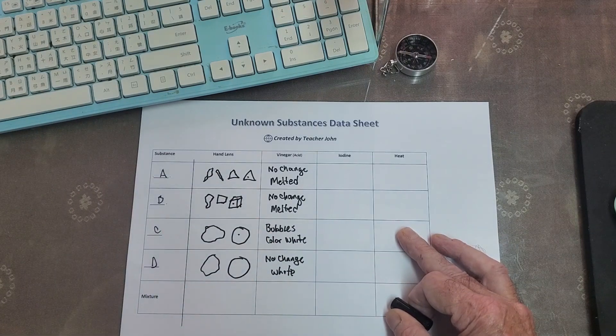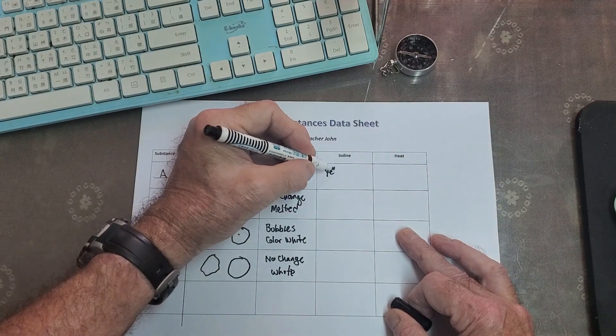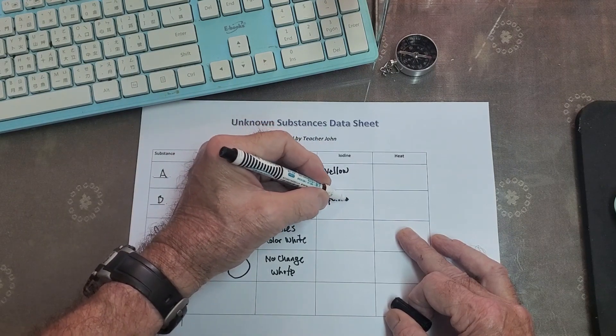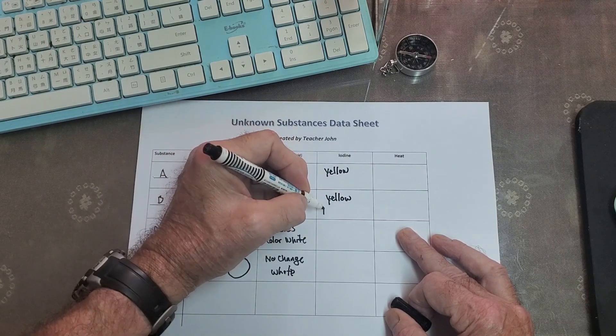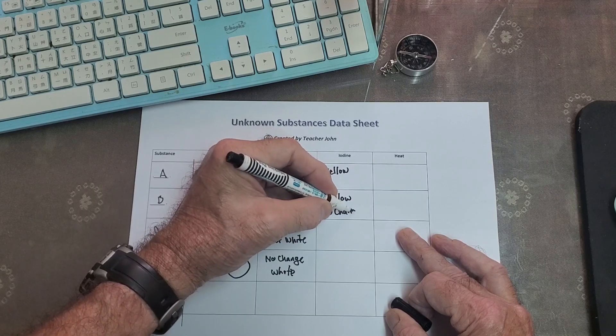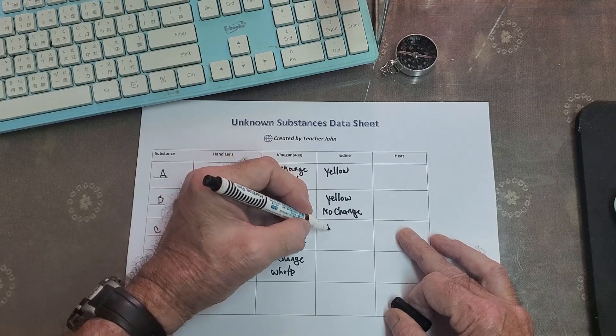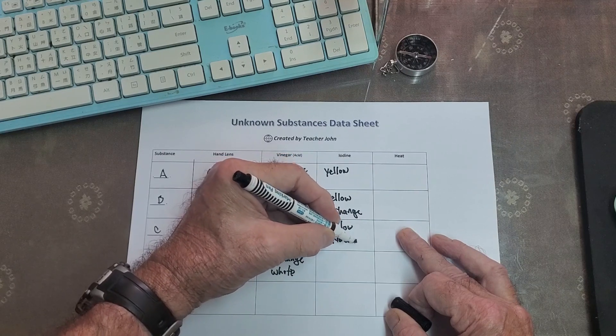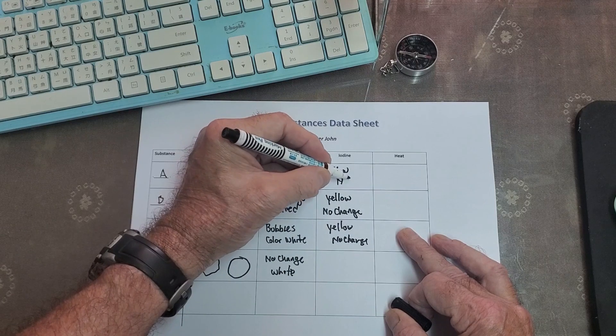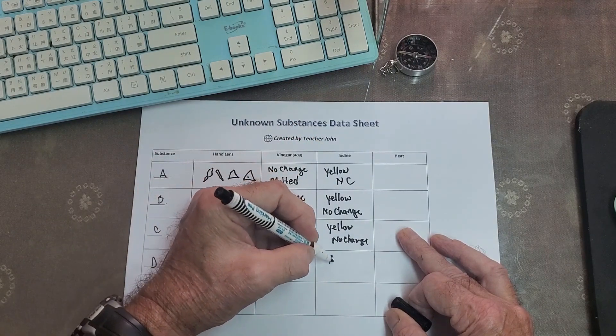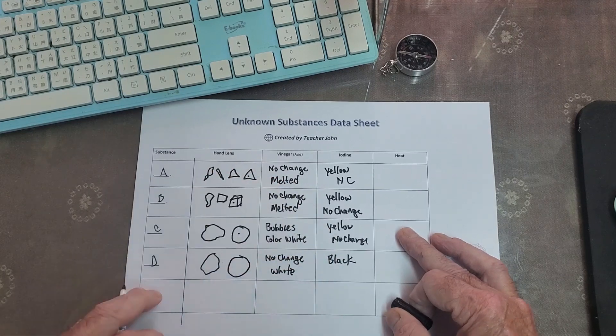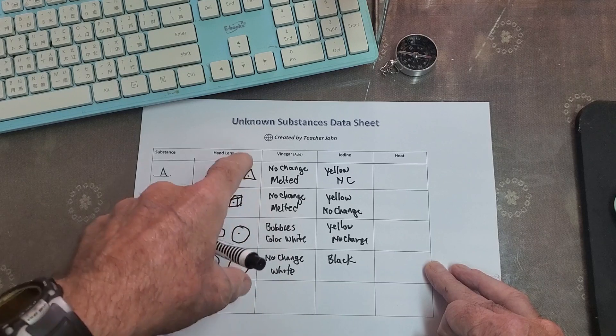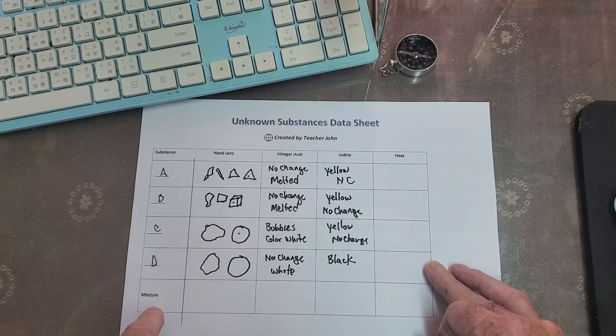Then we went to the iodine test. And this one, yellow. And B, also yellow. Remember, it was the color of the iodine. And so really, no change. You could even write, no change. And C, very boring, still, yellow, or no change. And D, that was different. That was black. So we can see the chart here. And then we can mix some powders and check and go back to our test to see what happens, to see what is inside.